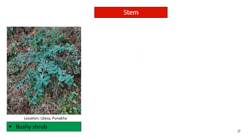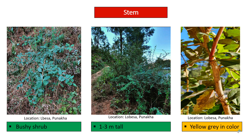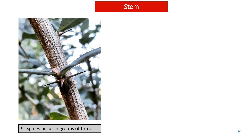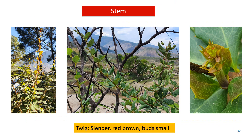Stem: It is a bushy shrub, 1 to 3 meters tall. Yellow-grey in color. Spines occur in groups of 3 on the stems. Bark is grey to reddish-grey with shallow splits, and inner bark is yellow. Twigs are slender, red-brown, and have small buds.